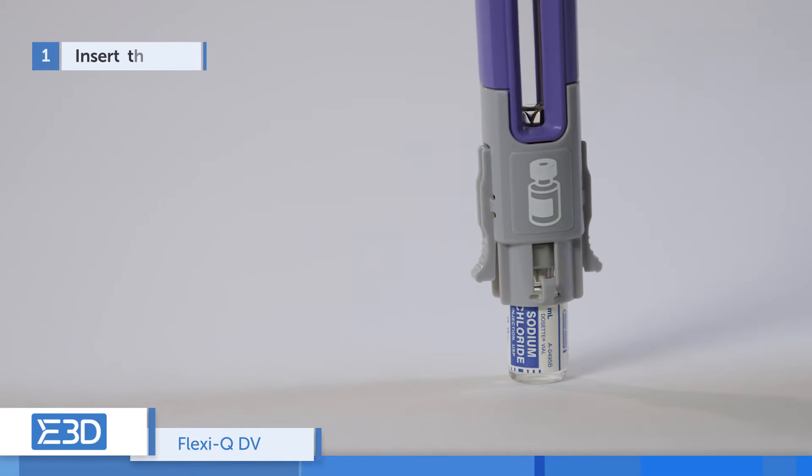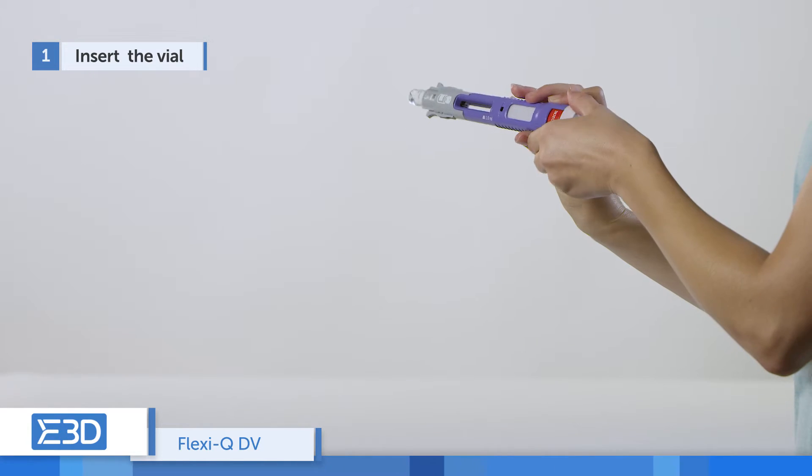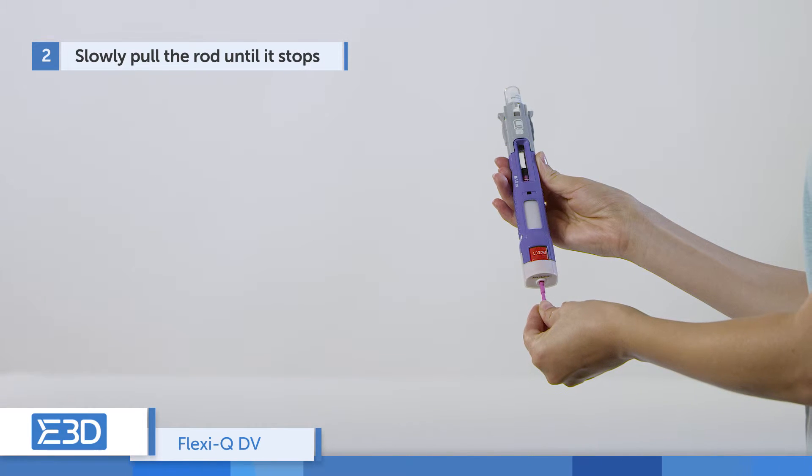Hold the device on top of the vial and press inwards. Slowly pull the rod downwards until it stops.